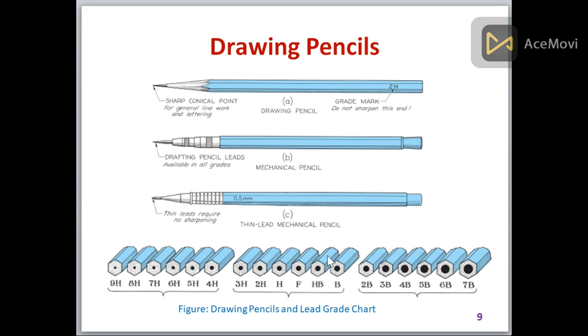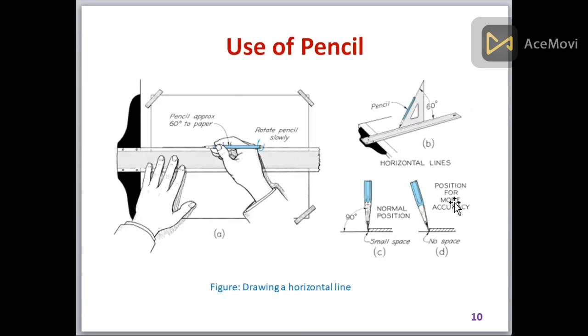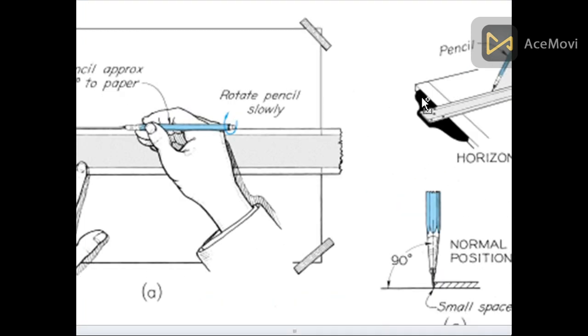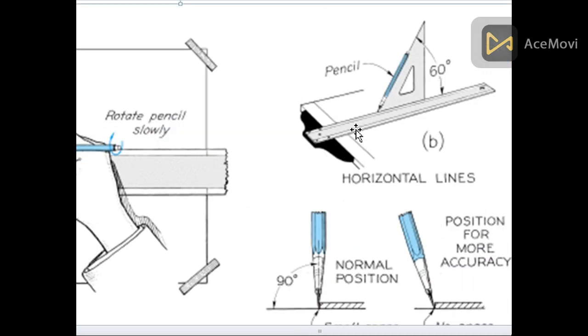How to use the pencil in a good way, in an accurate way? Hold the pencil with three fingers - your index finger, your middle finger, and your thumb. Grip the pencil with these three fingers and also tilt the pencil along the scale at 60 degrees, like this. You can see this is tilted at a 60 degree angle.